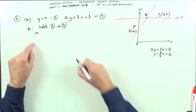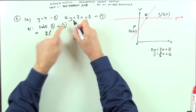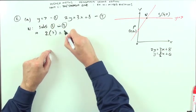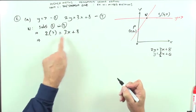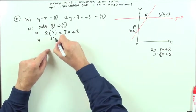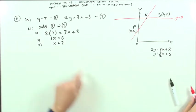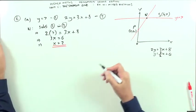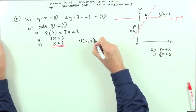That means equation 2, 2 times 7 equals 3x+8. That's easy: 3x equals 14 minus 8, which is 6, so 3x=6, so x=2. You already know that y is 7, which means that the point N is (2,7).